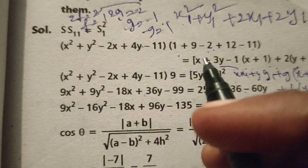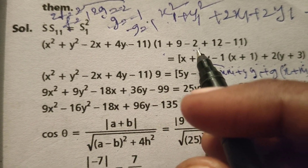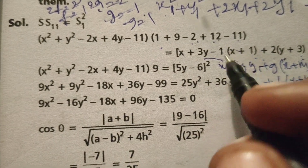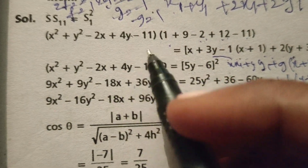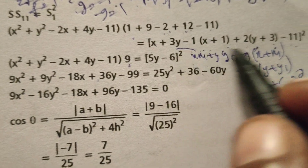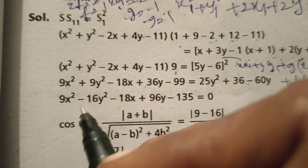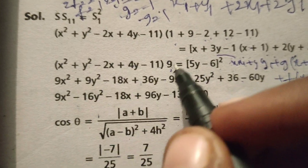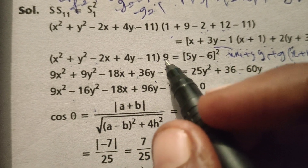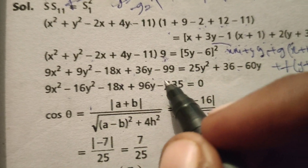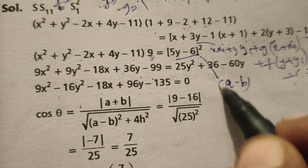Now simplifying S₁₁: 1 + 9 - 2 + 12 - 11 = 9. Applying the formula S · S₁₁ = S₁²: (x² + y² - 2x + 4y - 11) · 9 equals (5y - 6)² after simplification, giving us 9x² + 9y² - 18x + 36y - 99.